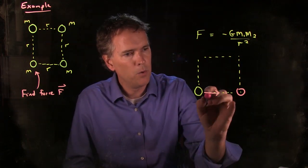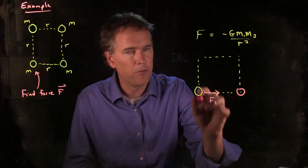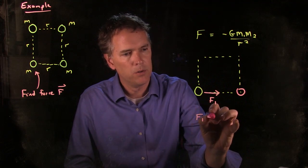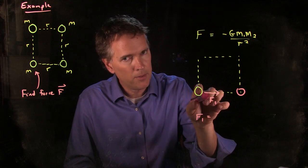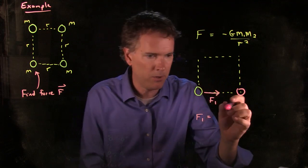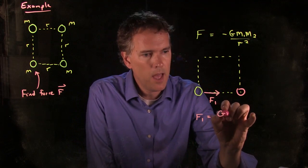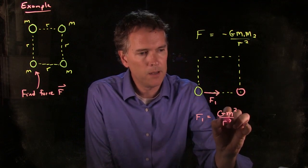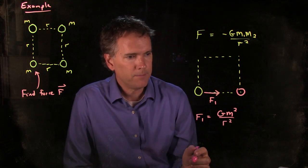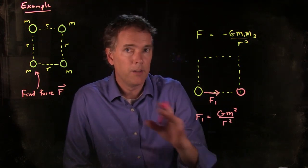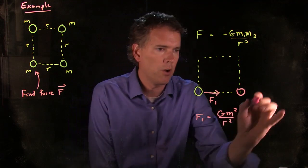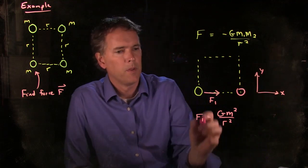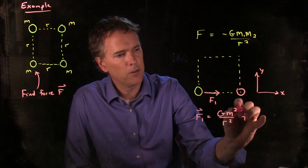Let's write that out. We'll call this F1, the force due to number one. F1 is going to be equal to — and we don't have to worry about the negative sign anymore because we already drew the arrow indicating the direction — so it just becomes G times M times M, which gives us M squared, divided by R squared. We have to be careful about the direction here. Let's call this the x direction and this the y direction. So the force is in the x direction, which is an i-hat.